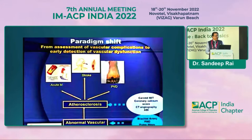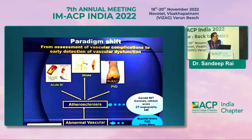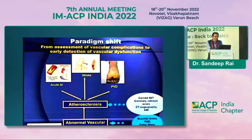Catching a person with risk factors at a stress test is just like discovering pregnancy in a labor room. So there has to be a paradigm shift — you have to now target abnormal vascular health. The two parameters that target it are endothelial dysfunction and arterial stiffness.